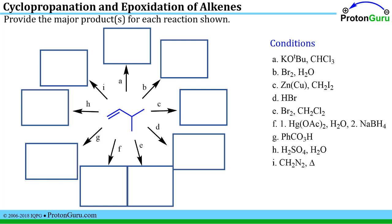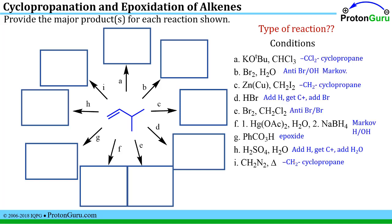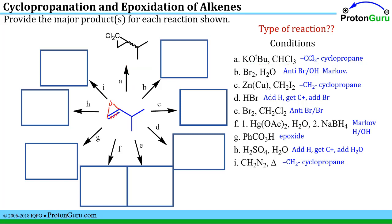One of the big challenges in organic chemistry is learning all these different reactions and figuring out how to solve problems when given a list of conditions. A good practice is to pause and see if you can recognize each step and sketch what each condition adds to the alkene. For reaction condition A — potassium tert-butoxide with chloroform — it adds a CCl2 unit to make a cyclopropane. This generates a stereocenter, so you draw a squiggly line to indicate a racemic mixture.